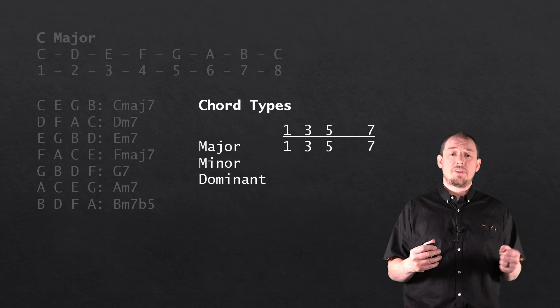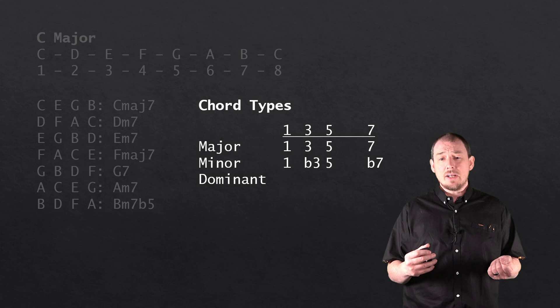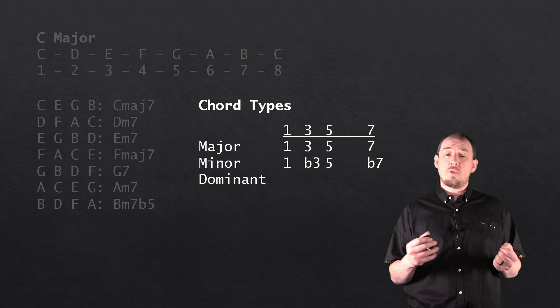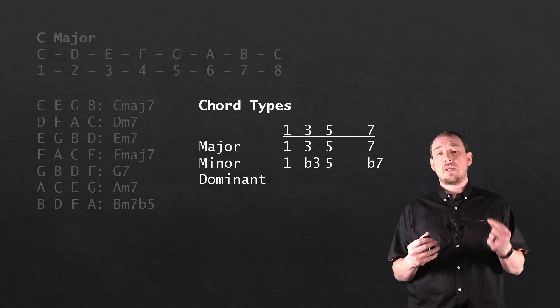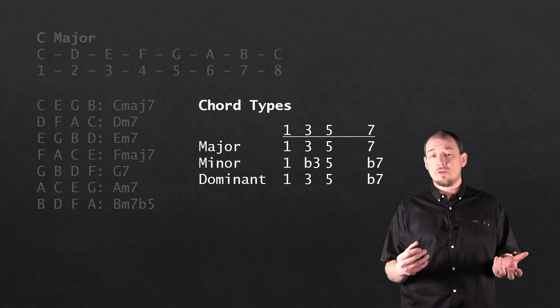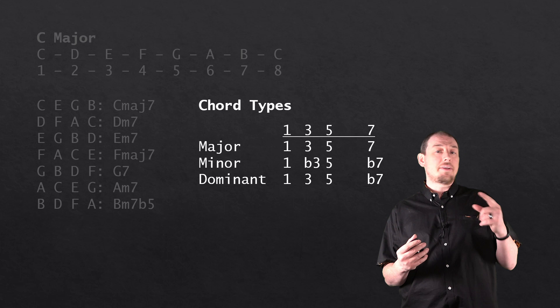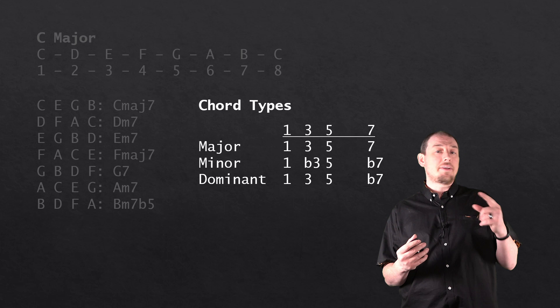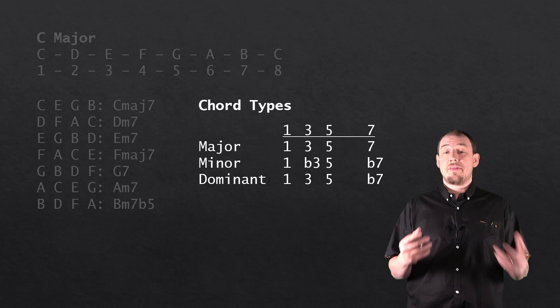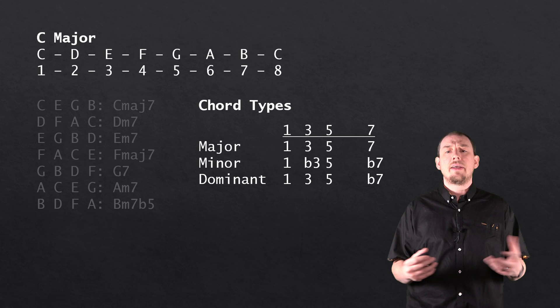The formula for a major chord is 1, 3 and 5, extended by adding the 7th. For a minor chord the formula is 1, flat 3, 5 and flat 7 — so you take the third note and drop it by a semitone, and take the seventh and drop it by a semitone. For a dominant chord it's 1, 3, 5 and flat 7 — halfway between major and minor. In its simplest form 1, 3, 5 it's actually the same as the major chord, and that's the root of much confusion around dominant chords. It's only when we add the flattened seventh that tells us it's dominant.